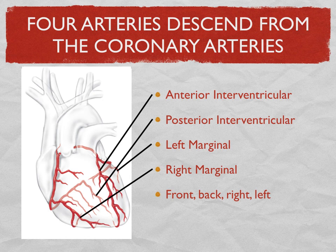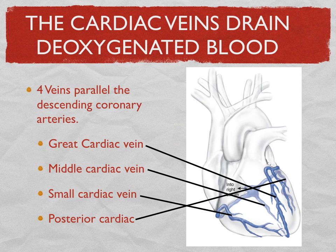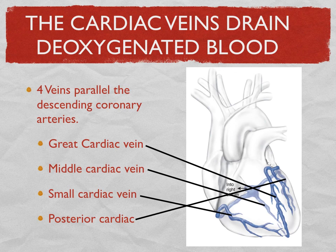Each one of these major descending arteries, after it delivers its blood to the muscle, the blood has to return to the heart to be pumped to the lungs again. This happens through veins, and there are four parallel veins descending over the surface. The big one in front is the great cardiac. Over on the right is the small cardiac, and then there's the posterior cardiac. The middle cardiac is the one running right down the back.